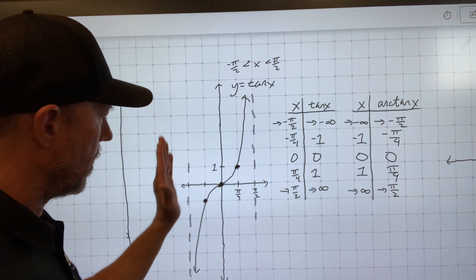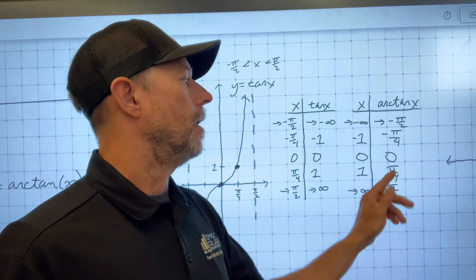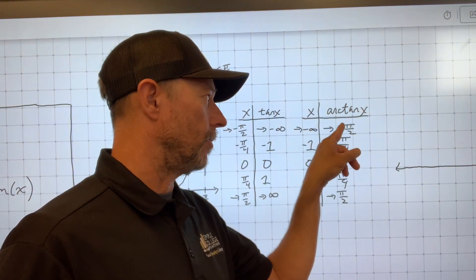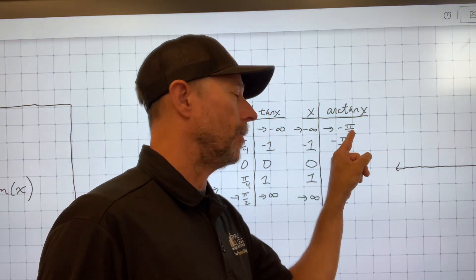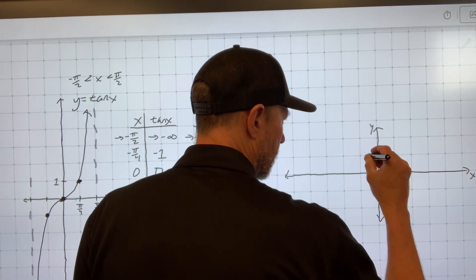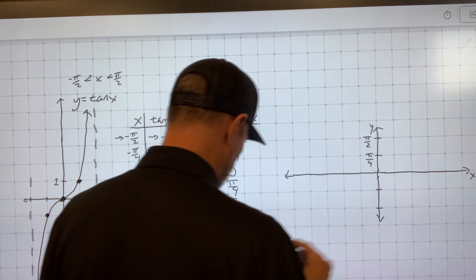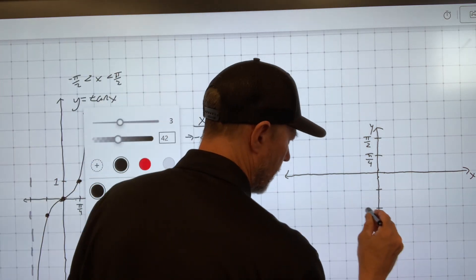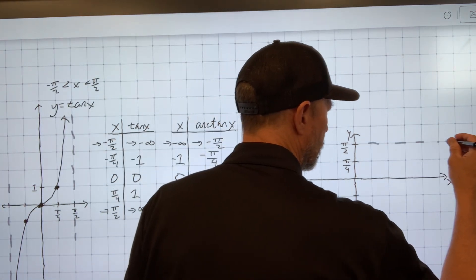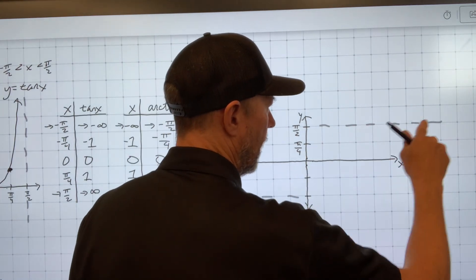So here we have vertical asymptotes at negative π/2 and π/2. That means on the inverse, there will be horizontal asymptotes. Since they're horizontal, the y-value is important. As the inputs go to negative infinity, the outputs will get closer to negative π/2, and our horizontal asymptote will be at negative π/2 and at π/2. I'm going to graph those first. Our outputs are π/4 and π/2, so I'll mark negative π/4, negative π/2, and graph the asymptotes. As the inputs go to infinity, the outputs will go to π/2.